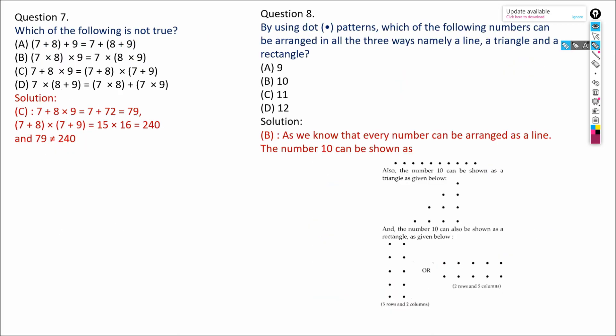Which of the following is not true? First: 7 plus 8 plus 9 can be written as (7 plus 8) plus 9 — this is the associative law of addition, so this is correct. Second: 7 into 8 into 9 can be written as (7 into 8) into 9 — this is the associative law of multiplication, also correct. Third: 7 plus 8 into 9 written as (7 plus 8) into (7 plus 9) — this is wrong, because 7 plus 8 into 9 means multiply 8 and 9 first, then add 7. Fourth: 7 into (8 plus 9) equals 7 into 8 plus 7 into 9 — this is the distributive law of multiplication over addition, which is correct. So the false statement is the third one.